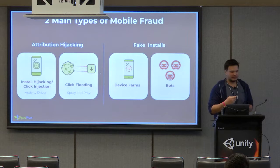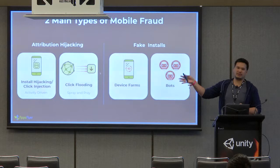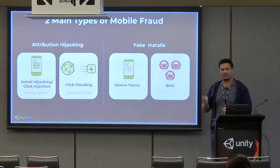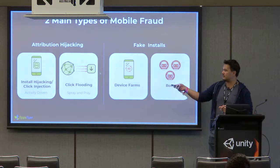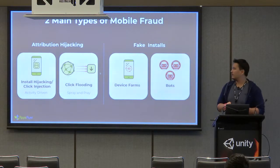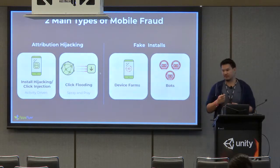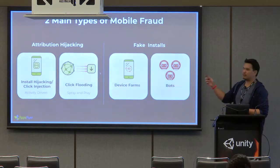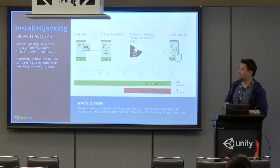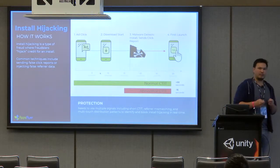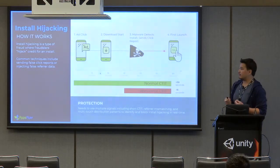Going back to the types of fraud, we categorize them into two distinct types. Number one: attribution hijacking — legitimate users, whether organic or paid, being hijacked through click injection or click flooding. Number two: fake installs — device farms or bots creating completely faked installs with no real users. These are the two primary ways fraudsters get away with it.